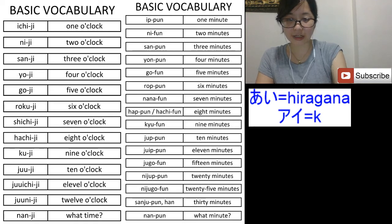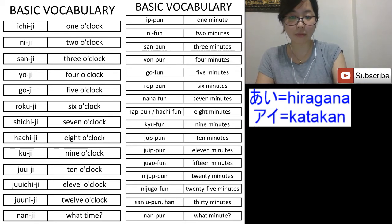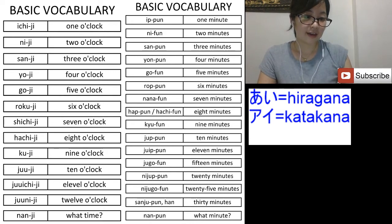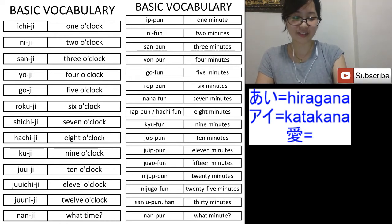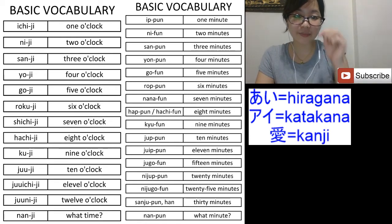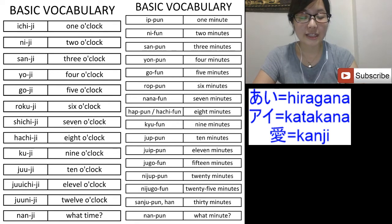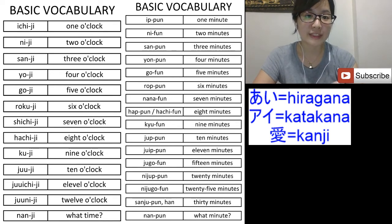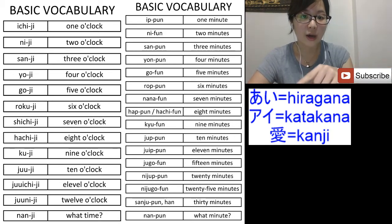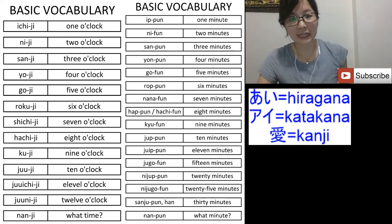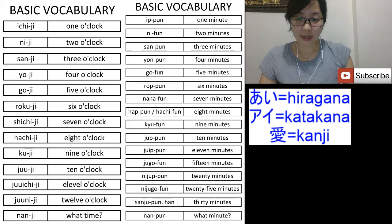And then this one is also 'i' — this one is called kanji. Kanji is the word which comes from China. In Chinese they write in a similar way, but they have a simplified version and a traditional version. We use the traditional Chinese.